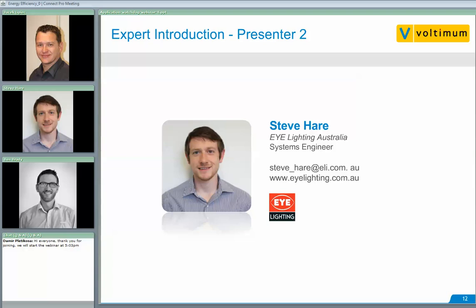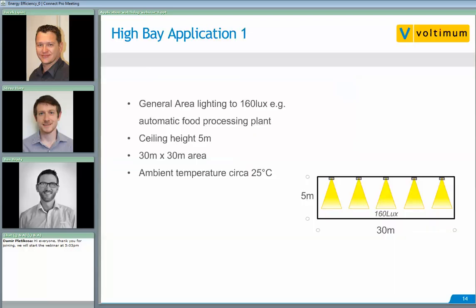Hello everybody, Steve here from iLighting. I'm going to run through the actual application of the three different light source types and how they compare against each other. The first application is a general area high bay lighting scenario — a lighting level of 160 lux, suitable for an automatic food processing plant. The ceiling height will be 5 metres, the area 30 metres by 30 metres, and ambient temperature roughly 25 degrees Celsius.